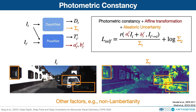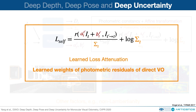The result on the bottom right shows that the network is able to predict higher uncertainty on the reflective windows. The predicted sigma can be seen as the learned loss attenuation, which makes the learning process more robust to noisy labels. In fact, sigma can also be interpreted as the learned weights of the photometric residuals in direct VO. Therefore, we integrate the uncertainty into direct sparse odometry by replacing the original weighting function with the inverse of the learned uncertainty.